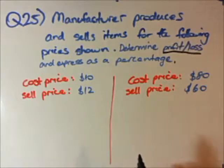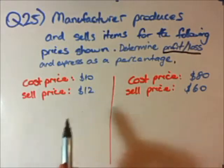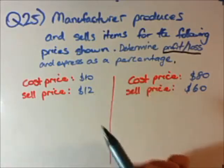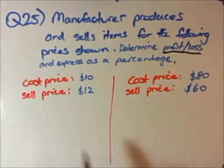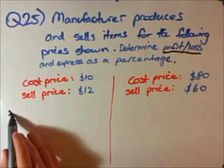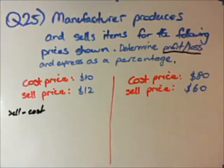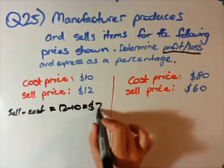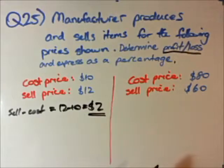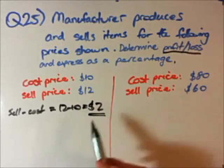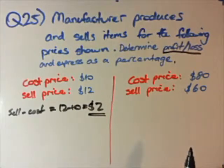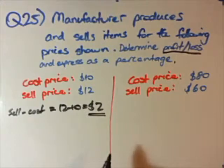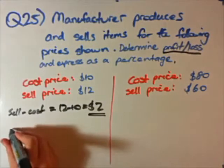Let's work through it as we would in an exam. The cost price was $10 — that's what it cost the manufacturer to produce the golf ball. He sold it for $12. To find the profit or loss, we go selling price minus cost price: 12 minus 10 equals $2. Because this is a positive number, that's a profit — a two dollar profit.